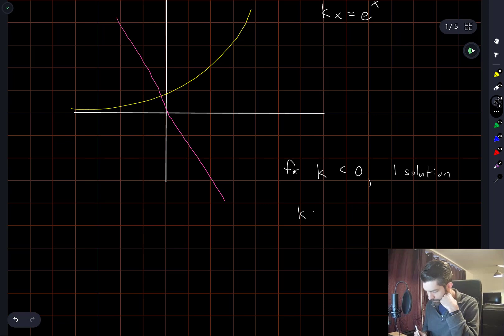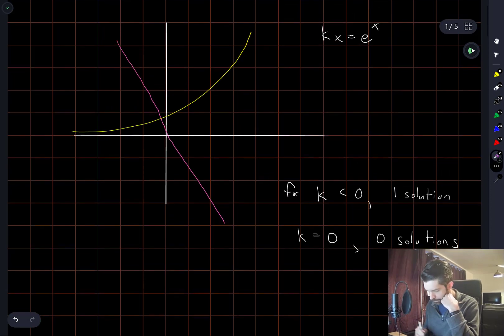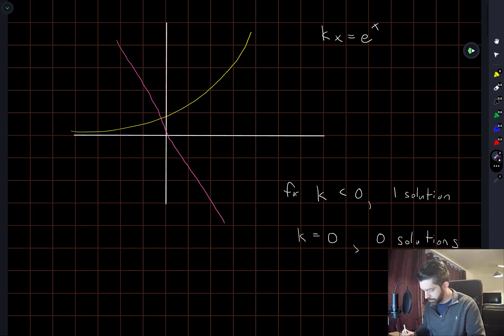It's also kind of obvious that when k is equal to zero, there are no solutions, right? If our pink curve here just lies along the x axis, well the exponential is never zero, so there's no intersection.